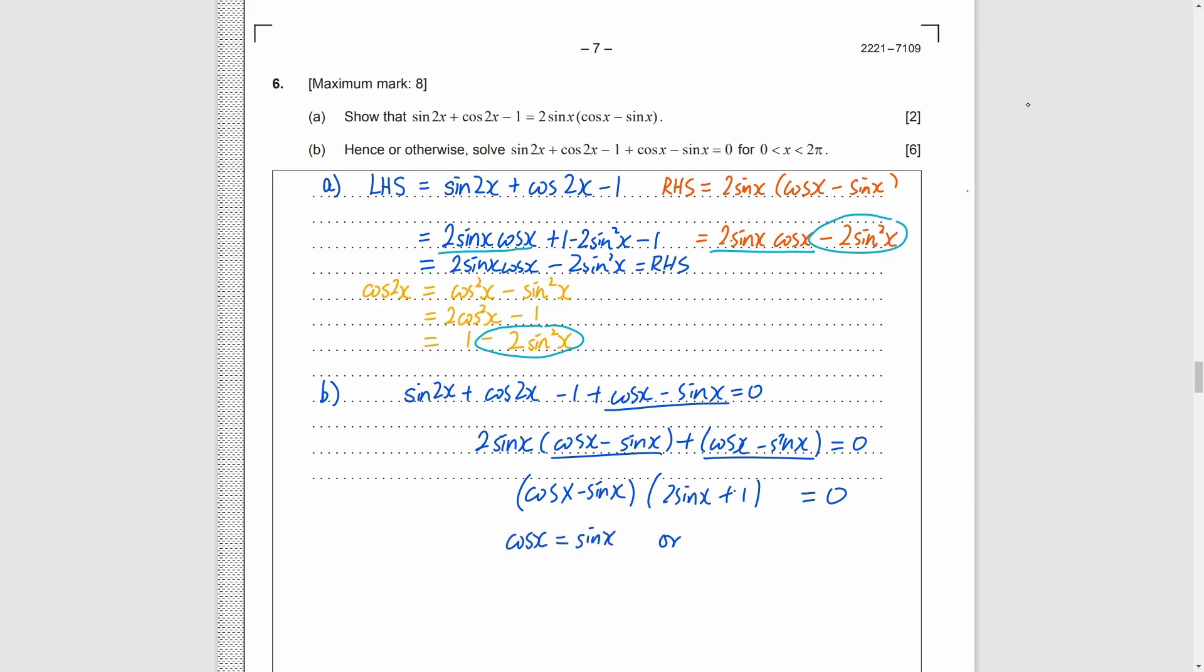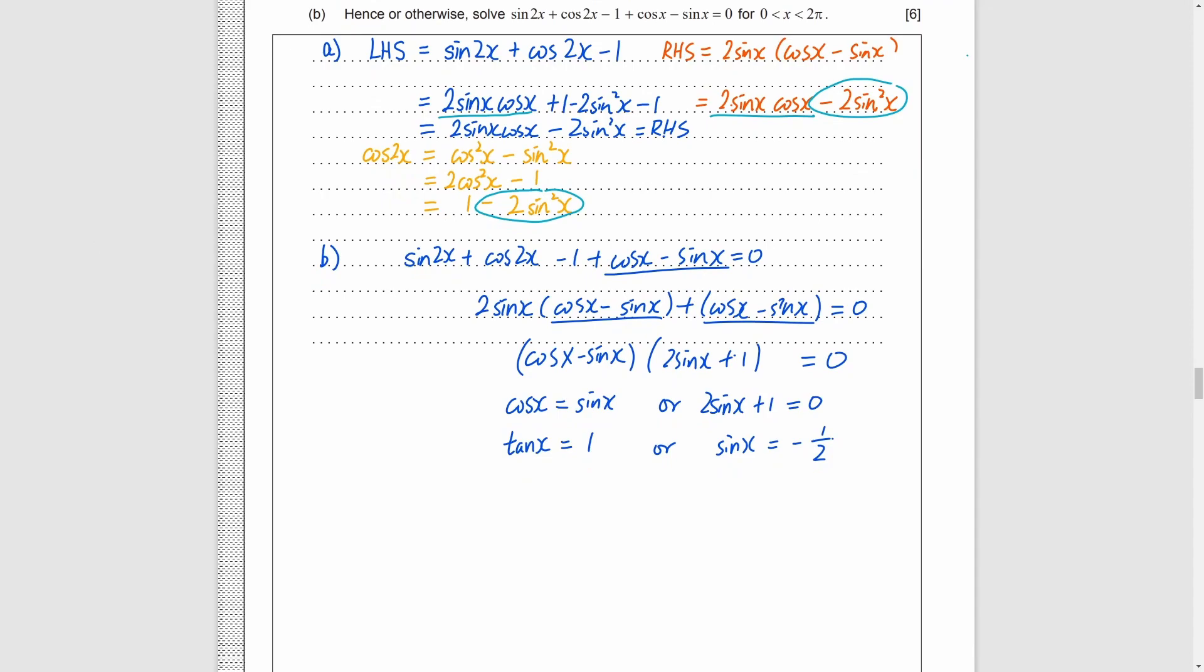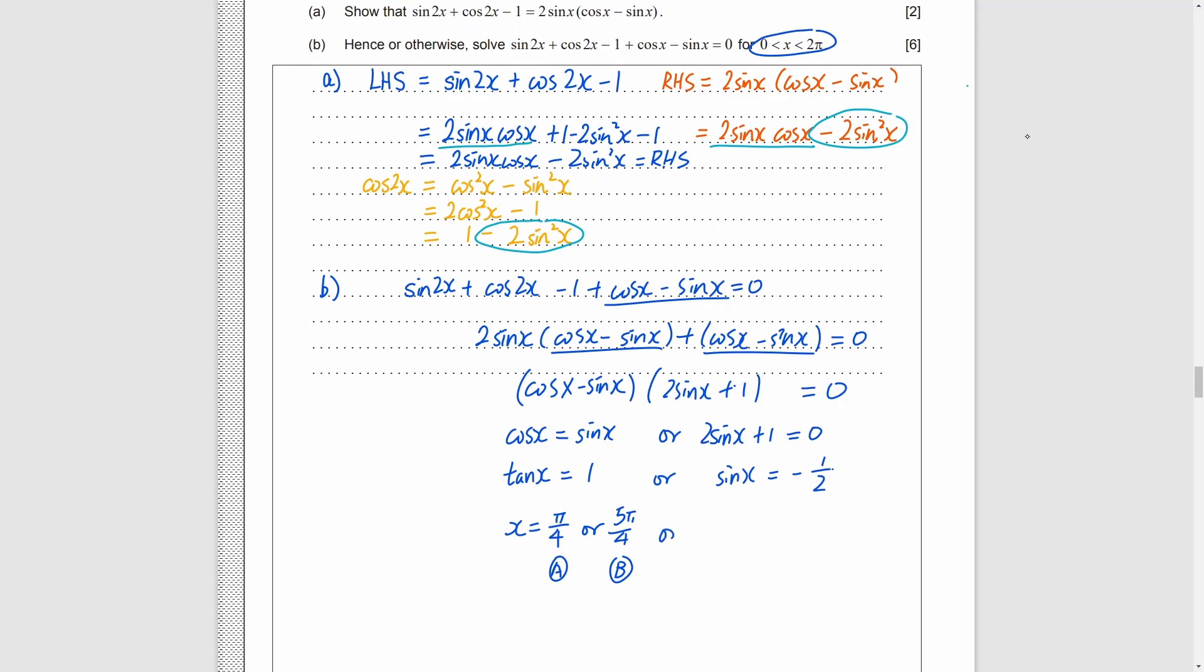By null factor rule, cosine x is equal to sine x, and 2 sine x plus 1 is equal to 0. We can get tangent x equals 1 and sine x equals negative half. As we should remember the trigonometric value from 0 to 90 degrees, we can find the first solution. I call it solution A. And I have a tricky way to find the second solution from 0 to 2 pi. I call it solution B. Then, the 4 solutions can be found easily.